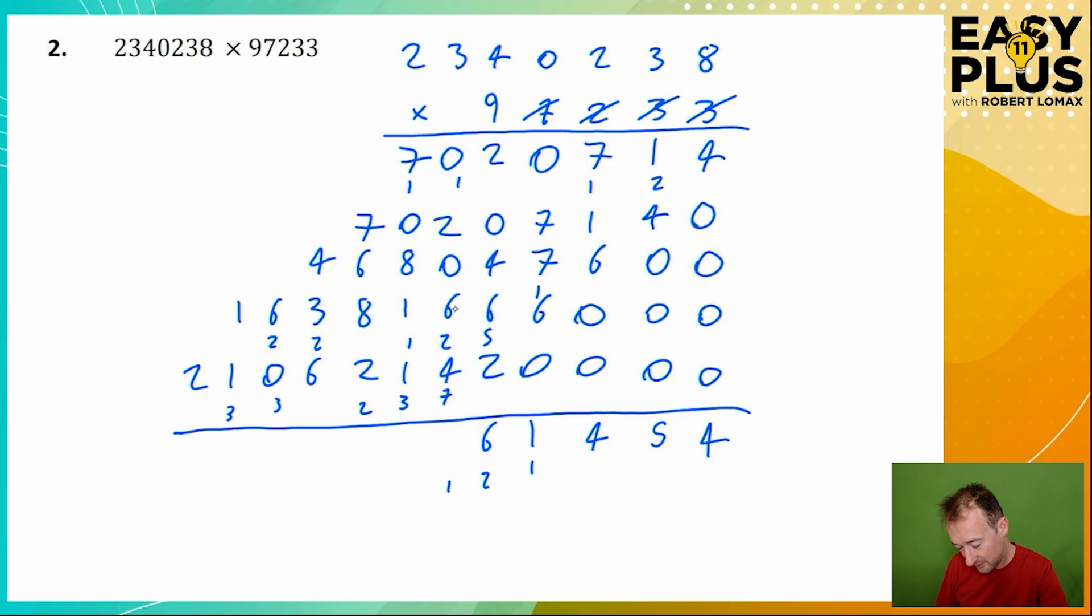2 and 6 is 8, plus 4 is 12, plus 1 is 13. 7 plus 8 is 15, plus 1 is 16, plus 1 is 17, plus the carried 1, 18.